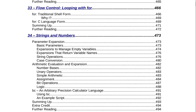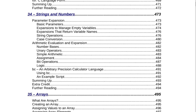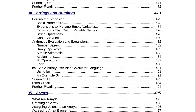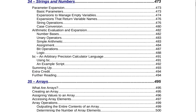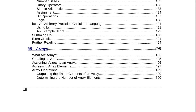Section 33 is Flow Control: Looping with For on page 466. That includes the traditional shell form and the C language form. Summing up and further reading. Section 34 is Strings and Numbers on page 473, covering parameter expansion, basic parameters, expansions to manage empty variables, expansions that return variable names, string operations, case conversion, arithmetic evaluation and expansion, number bases, unary operators, simple arithmetic, assignment, bit operators, logic, and bc as an arbitrary precision calculator language. Summing up, extra credit, and further reading.